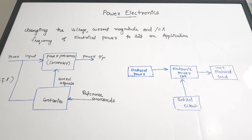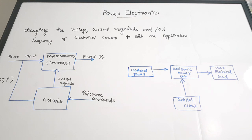The power electronics subject is common to both electrical and electronics branches, so it is actually an interdisciplinary subject. Power electronics is the process of changing parameters like voltage, current, and frequency, and by adjusting these parameters we convert electrical power into a form suitable for a particular application. Various electronic components require various amounts of power, so we require mechanisms to convert it to the appropriate form.